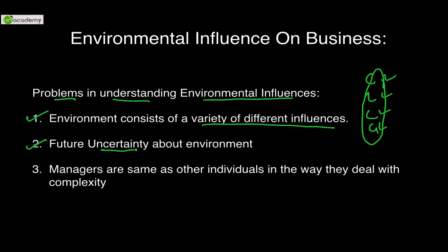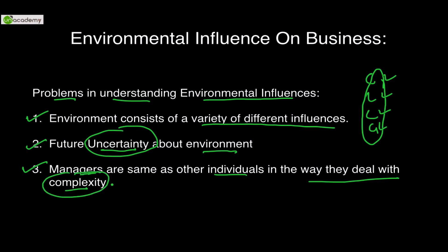Second: the future is always uncertain. We do not know about the future, our performance, or our results. No matter however well you understand the business, it is always uncertain. Third is the manager's ability to deal with complexity. Managers are also humans — they can make mistakes. So we face the risk of mistakes from the managers operating a business. Three problems: variety of different influences, uncertainty, and complexity.